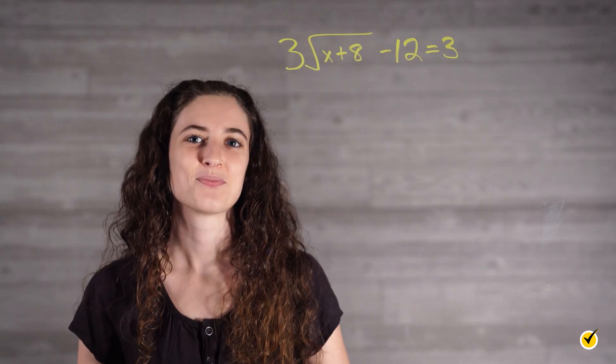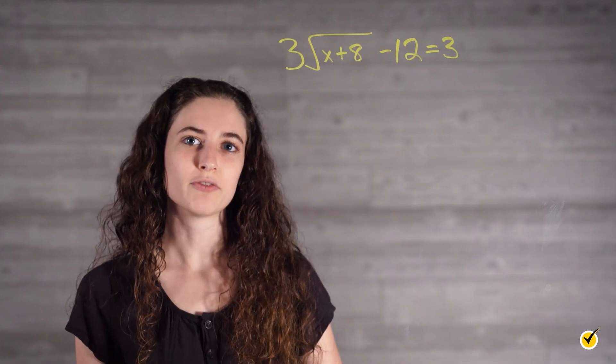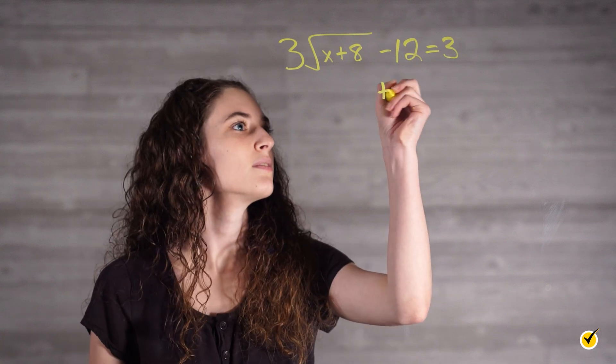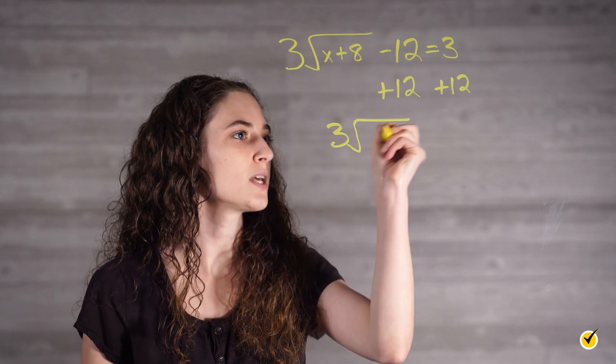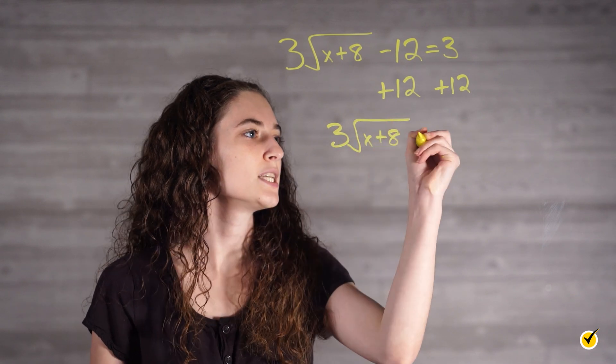Think you've got it? Let's check. First, we want to add 12 to both sides. 3 root of x plus 8 is equal to 15.